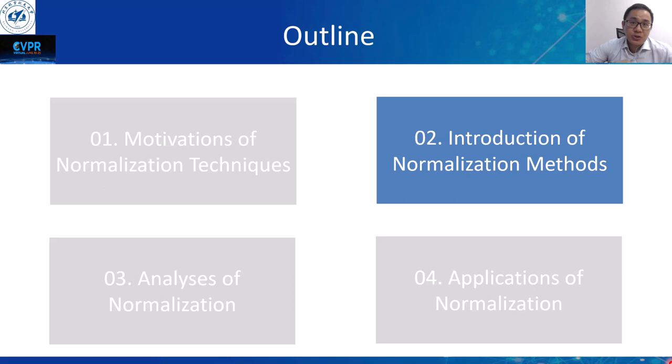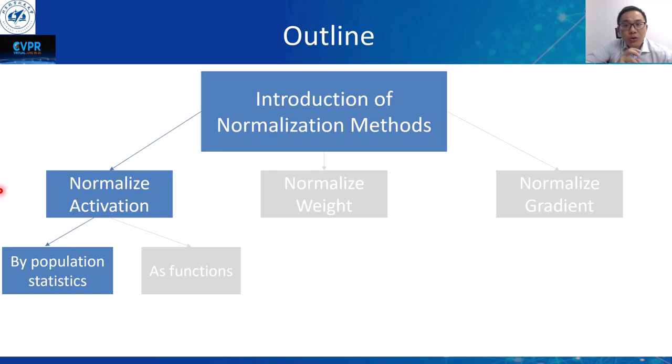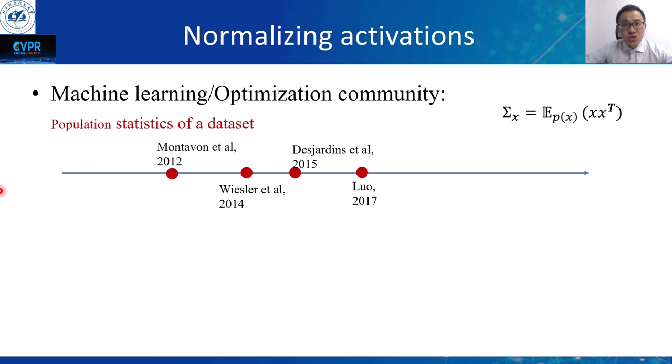We have shown the motivations and foundations from the view of optimization. Here we will provide an introduction to variance normalization methods. I will show the methods for how to normalize the activation. As illustrated before, normalizing input is performed over the full dataset, usually as a pre-process for improving the conditions of the optimization problem.